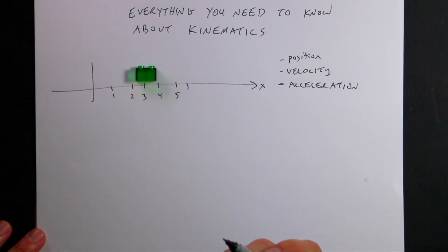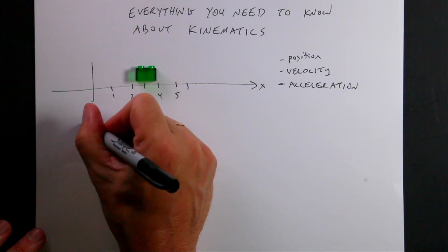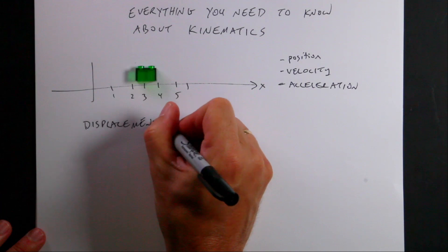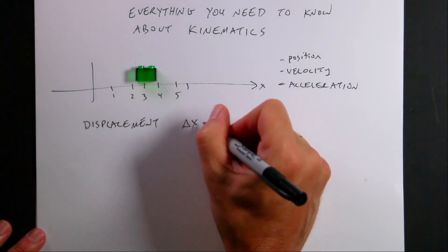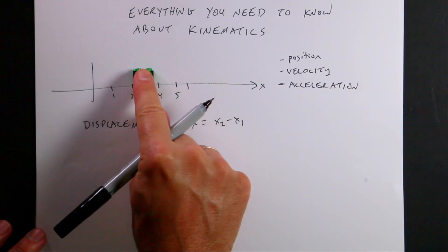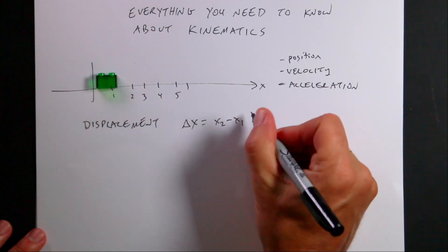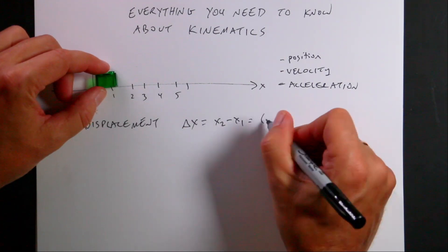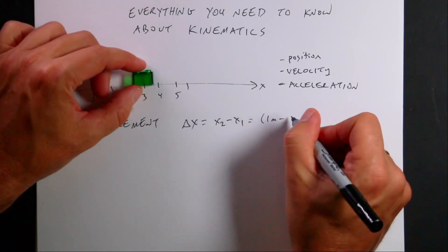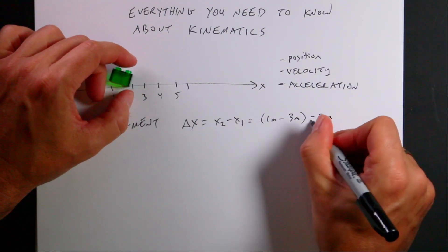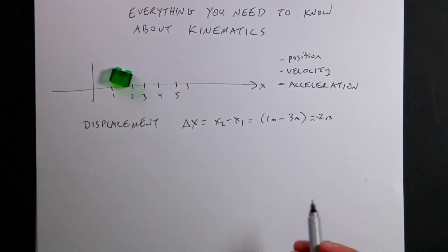What we really want is displacement. Displacement is delta X, and we write this as X2 minus X1. So if the block starts at three and then goes to one, the final would be one meter minus the initial of three meters, and the displacement would be negative two meters. That's the displacement.